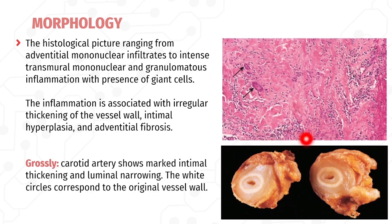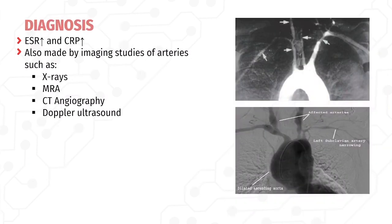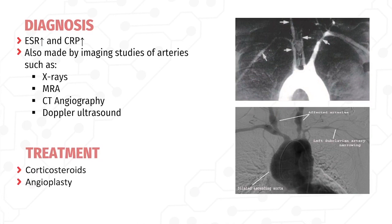Histologically, Takayasu arteritis ranges from adventitial mononuclear infiltrates to intense transmural mononuclear and granulomatous inflammation with giant cells; there is destruction and fibrosis of the arterial media with mononuclear infiltrate. This is associated with irregular thickening of the vessel wall, intimal hyperplasia, and adventitial fibrosis. A cross-section from the right carotid artery shows marked intimal thickening and luminal narrowing. Diagnosis uses elevated ESR and CRP, plus imaging such as MR angiography, CT angiography, or Doppler ultrasound. Treatment involves corticosteroids and angioplasty.